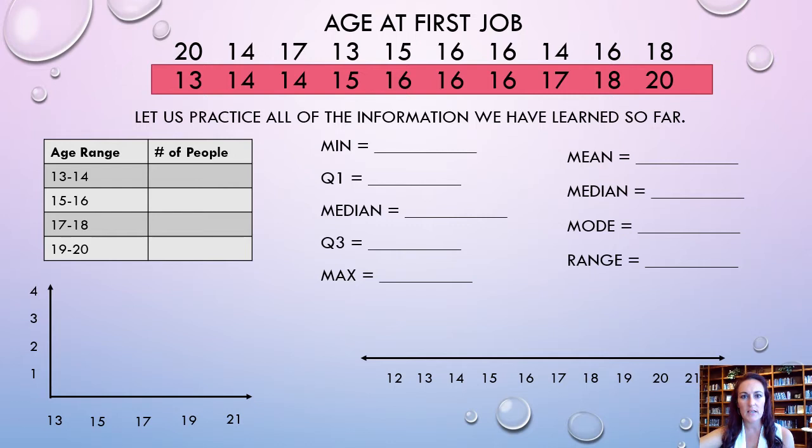So, when we put them in order from least to greatest, we have 13, 14, 14, 15, 16, 16, so there are three of them, and then 17, 18, and 20. So, what we need to do is we need to figure out how to fill out all the information up here using the data that we have.